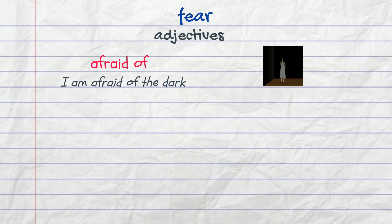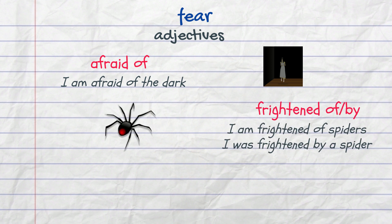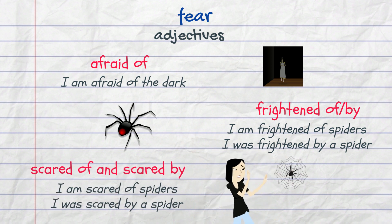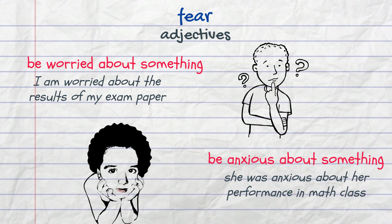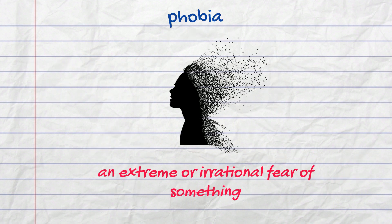Adjectives are very often used to talk about one's fearful state. A person can be 'afraid of' something — for example, 'I'm afraid of the dark' — or 'frightened of' or 'frightened by' something, though the meaning is slightly different. 'I'm frightened of spiders' means a general fear of spiders, whereas 'I was frightened by a spider' refers to a specific situation. In the same manner we can use 'scared of' and 'scared by.' We can also say 'worried about' something — for example, 'I'm worried about the results of my exam.' When a person is anxious, it means they feel very uneasy about something, especially when the outcome is uncertain — for example, 'She was anxious about her performance in math class.'